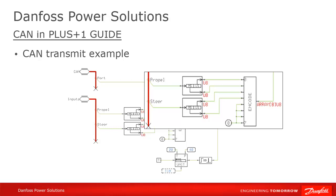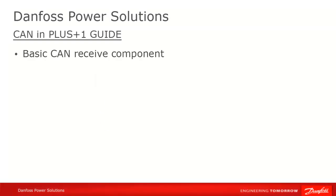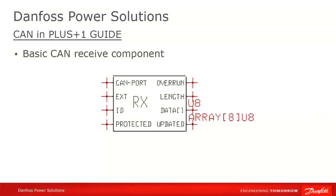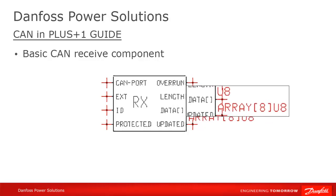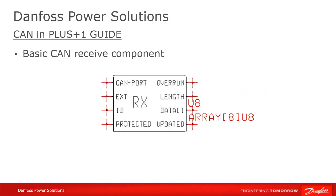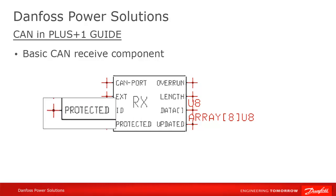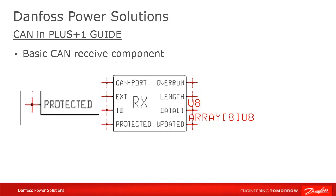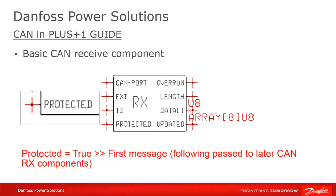Smaller data types, namely Booleans, can be combined using the encode component. There are three receive CAN components, the first of which is the basic CAN receive component. It receives from 0 to 8 bytes of data in each message. The message ID must match the ID of the incoming message exactly. The protected parameter determines how multiple messages with the same ID arriving in one loop will be handled. If the protected flag is set to true, then only the first message with that ID will be read amongst all the CAN messages that have arrived during the last loop.